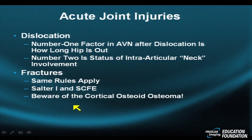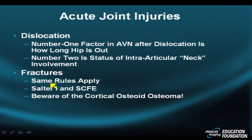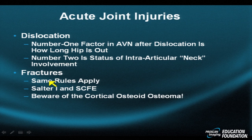Two other caveats: don't forget to look at the physis. Physeal fractures are commonly missed on MRI. They present as areas of physeal widening in the setting of acute trauma. You can also get physeal widening due to indirect or repetitive low-grade trauma, but that is a story for another day. The history will be very helpful to you — namely, the history of an acute event.